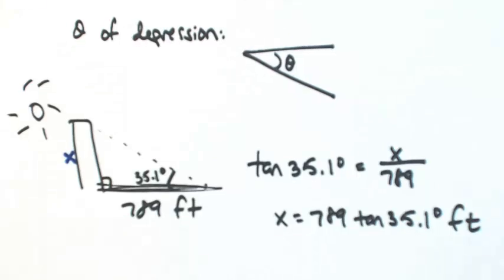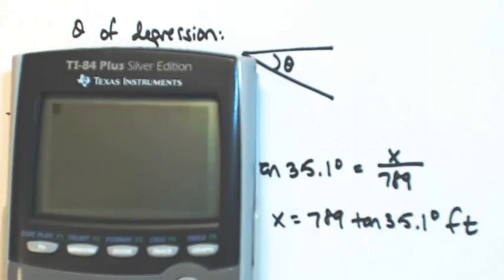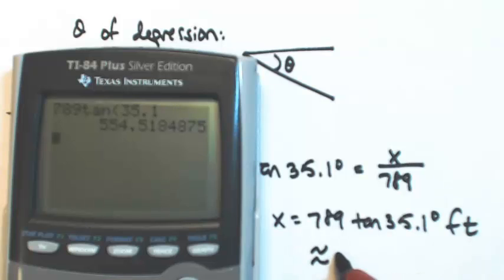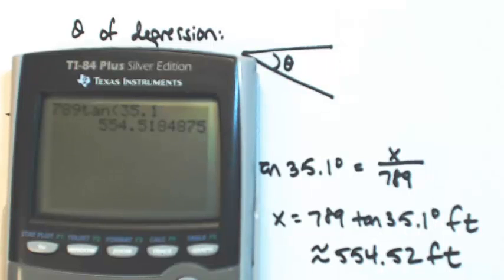If you're looking for an approximation, we'll just go to the calculator. Make sure you've got degree mode. So 789 times the tangent of 35.1. Okay, so about 554.52 feet. Very good. Okay, next time.